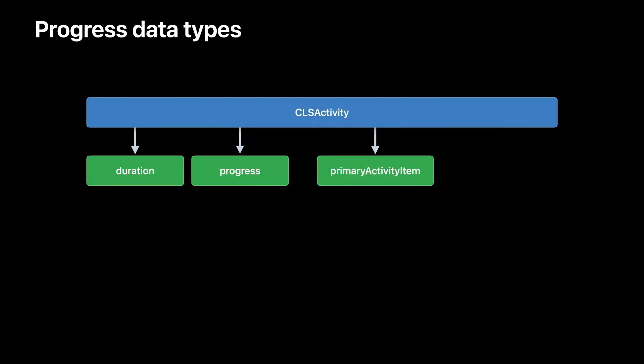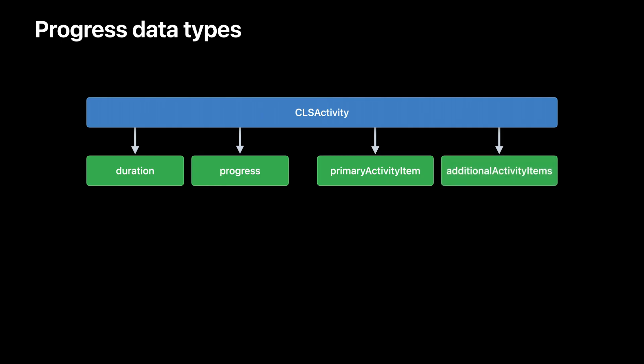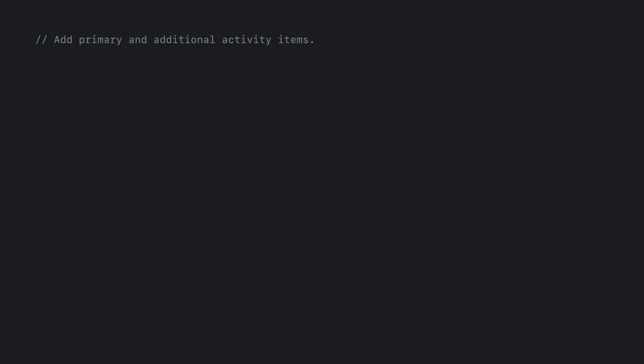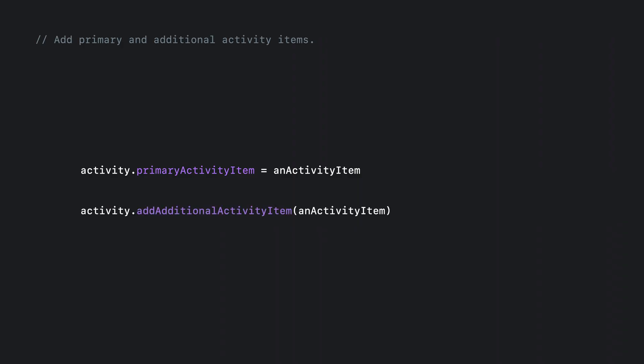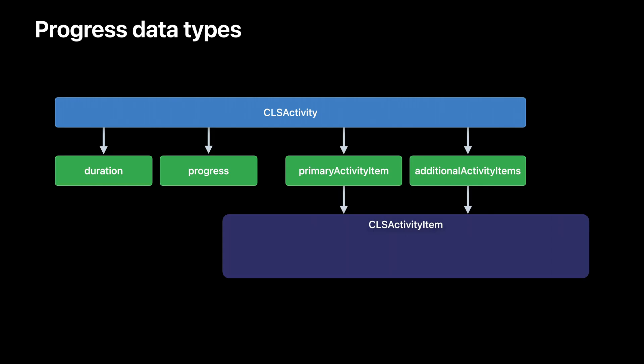We also have the primary activity item, which is useful if you have a file that can be edited. Setting the primary activity item indicates the piece of data you want to highlight to students and teachers, and it shows up in the main part of the UI in the Schoolwork app. There's also an additional activity items property — this is an array of CLS activity items, which is useful for adding additional metadata. To add a primary activity item, set the primary activity item property on CLS activity. To add an additional activity item, call the add additional activity item function on CLS activity and pass in the activity item you want to add.